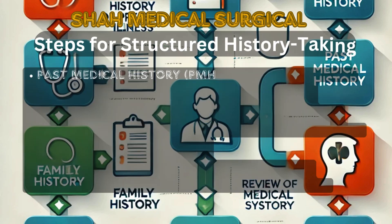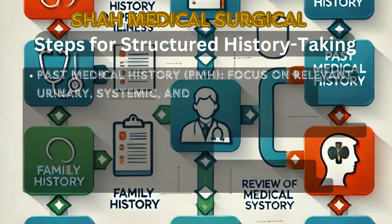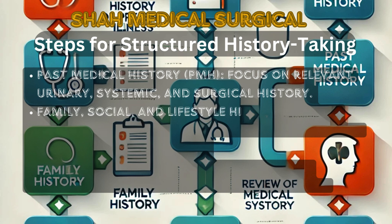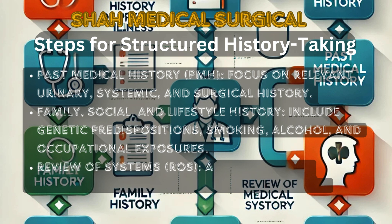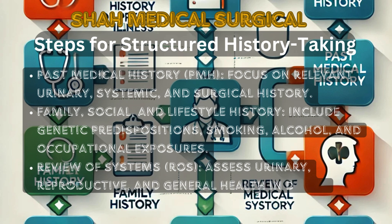Third, past medical history: emphasize urinary, systemic, and surgical history that might contribute to the current condition. Fourth, family, social, and lifestyle history: explore genetic predispositions, smoking habits, alcohol use, and any occupational exposures. Fifth, review of systems: conduct a comprehensive review of urinary, reproductive, and general health to identify associated or systemic symptoms.